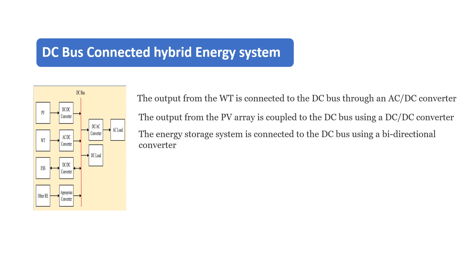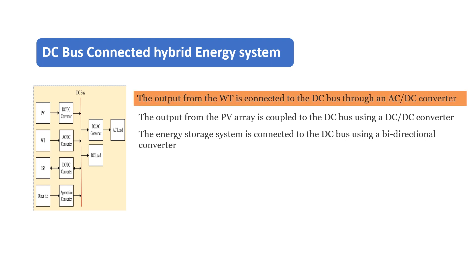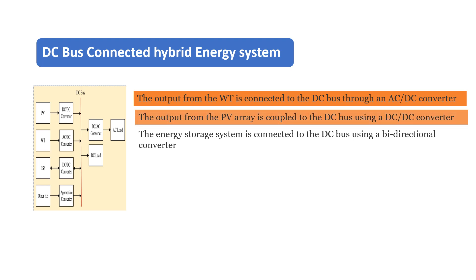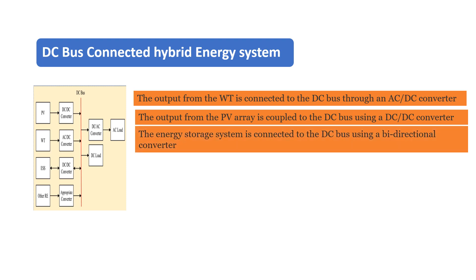In DC bus connected architecture, the output from the wind turbine is connected to the DC bus through an AC-DC converter, while the output from the PV array is coupled to the DC bus using a DC-DC converter. The energy storage system is connected to the DC bus using a bi-directional converter to allow its charging and discharging mechanism.